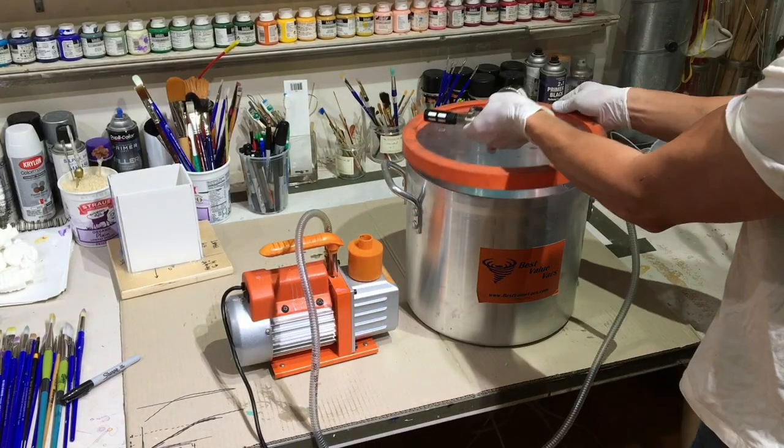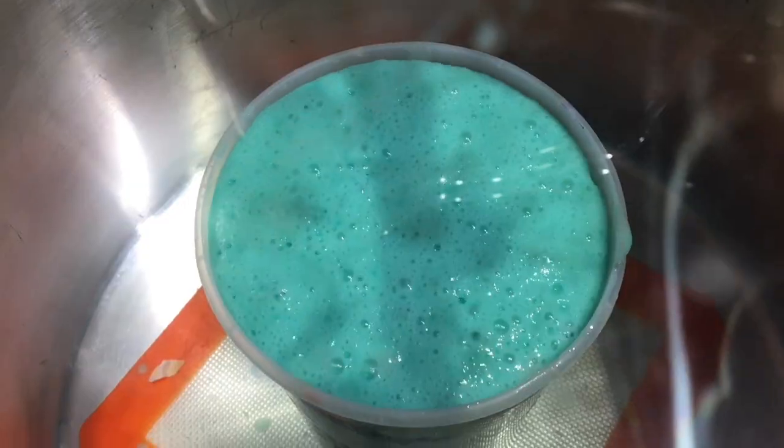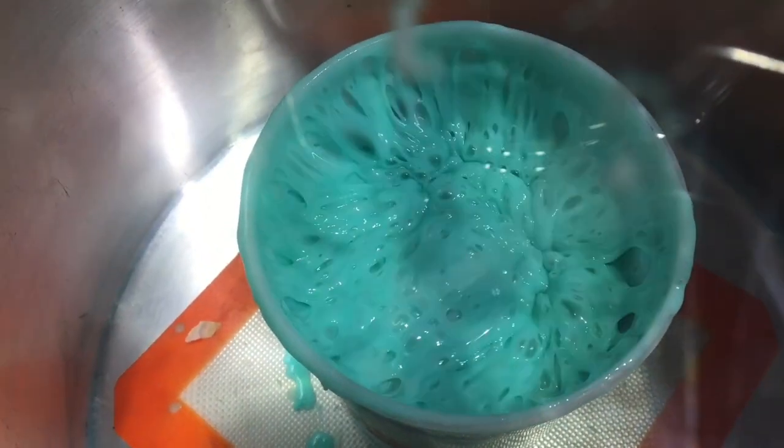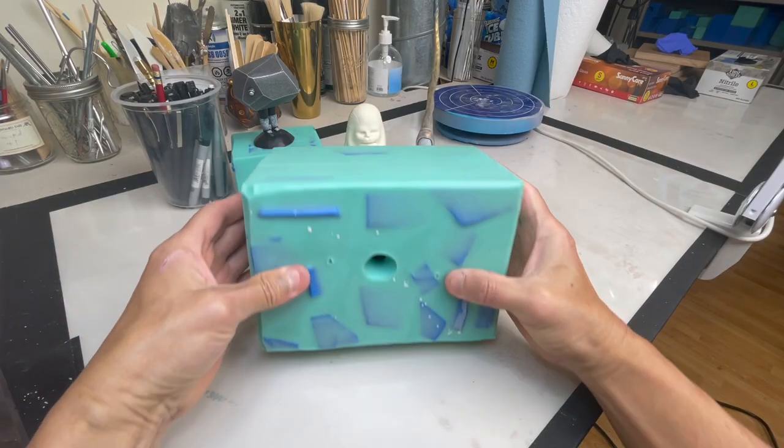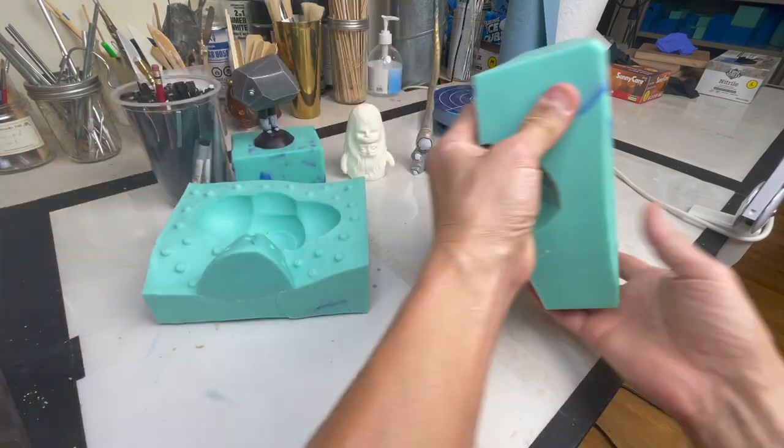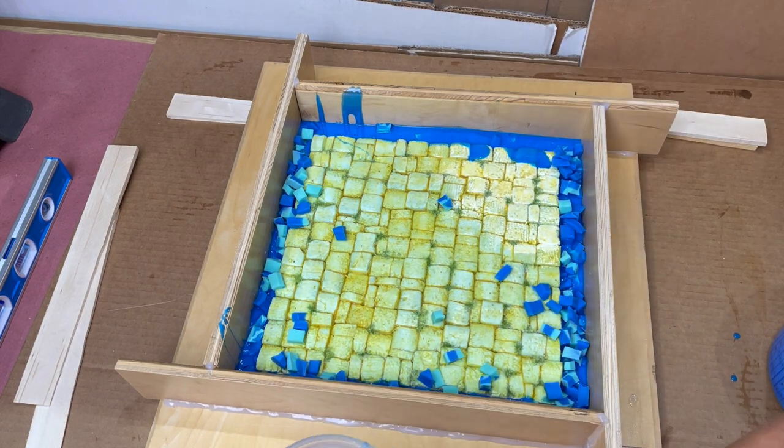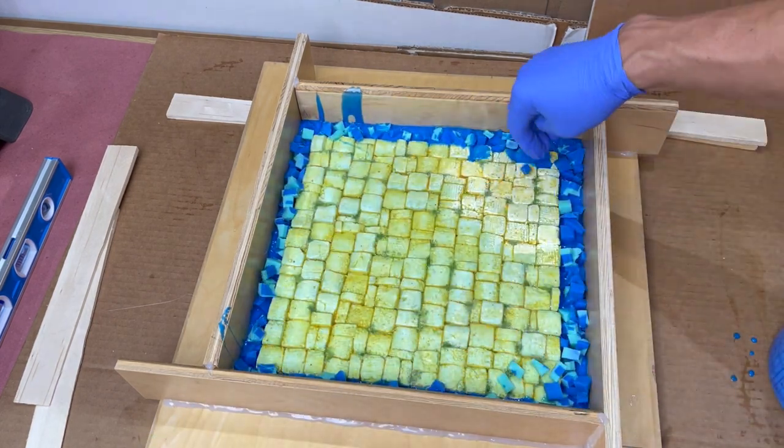Degassing is where you put your silicone in a vacuum chamber. This actually removes the air from your silicone with this little vacuum pump. I use this technique for almost all my molds because they're almost always more complex. But this mold is really as simple as it gets and the skinny waterfall technique will work just fine.